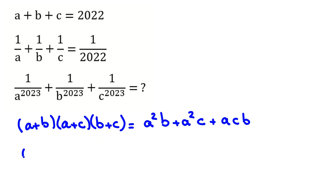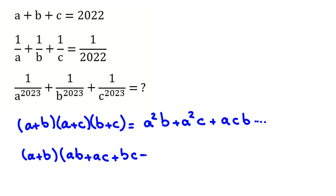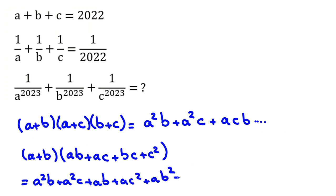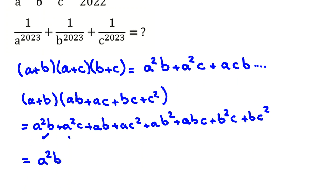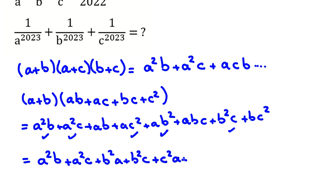If you want to multiply in an easy way, you will see it will be something like this plus 2ABC. For beginners, let's solve it step by step. We get AB plus AC, then A times B equals A squared B, A times C equals A squared C, plus CB plus C squared. Multiplying A through gives A squared B plus A squared C plus ABC plus AC squared. For B, we get AB squared plus ABC plus B squared A. Simplifying, we have A squared B, A squared C, B squared A, B squared C, C squared A, C squared B.